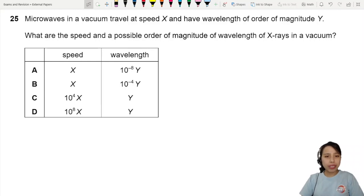Microwaves in a vacuum travel at some speed. We know these are electromagnetic waves, so this is the speed of light, actually. Also known as constant C, and it has some wavelength Y.